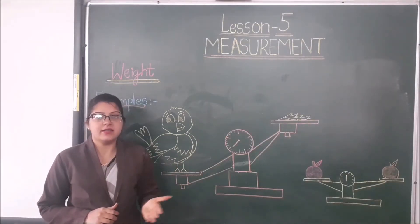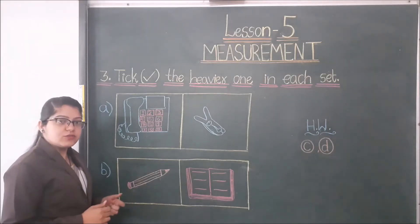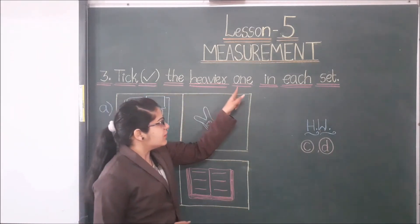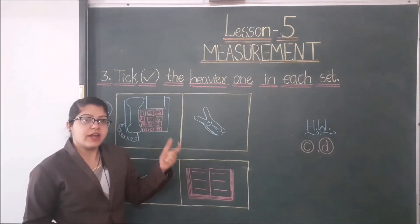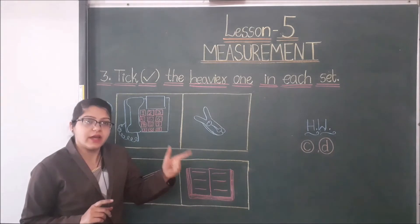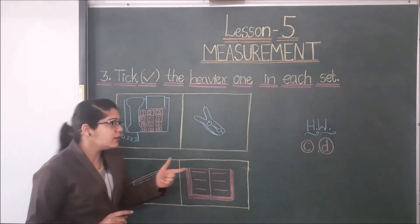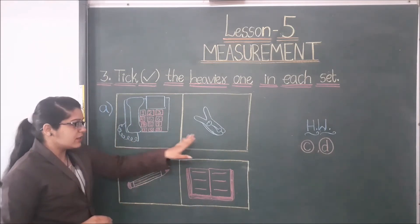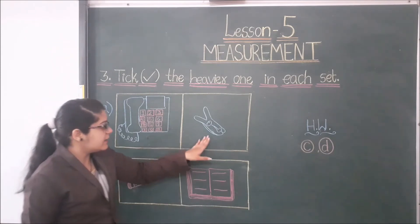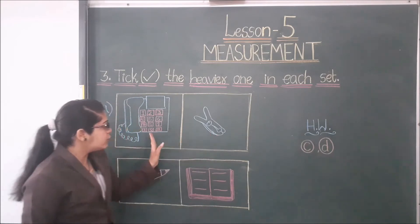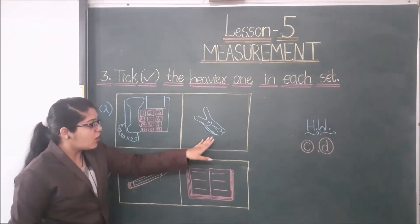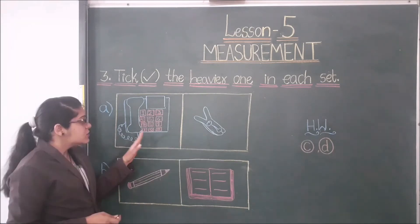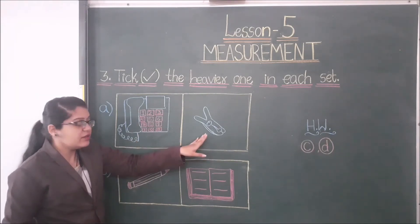Now students, let's see question number 3: 'Circle the heavier one in each set.' You have to compare the things and circle the one that is heavy. Let's see the first one — two things are given: a telephone and a cloth clip. Which is heavy? This telephone is heavier than a cloth clip, so we circle the telephone.